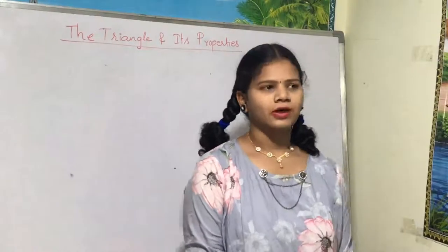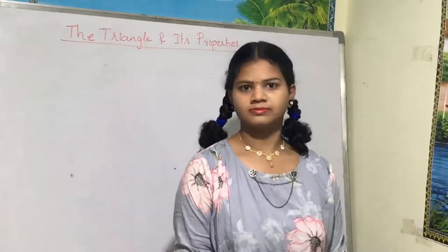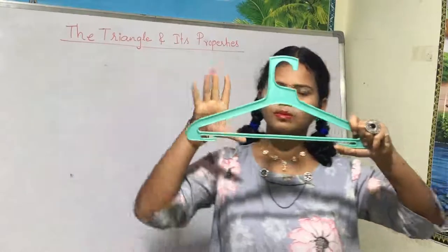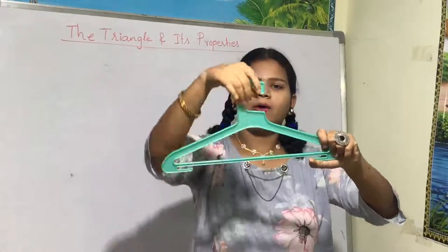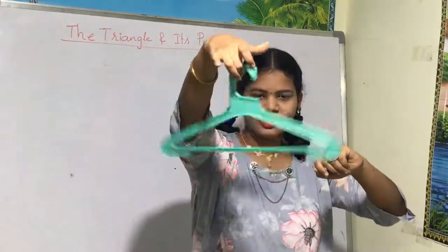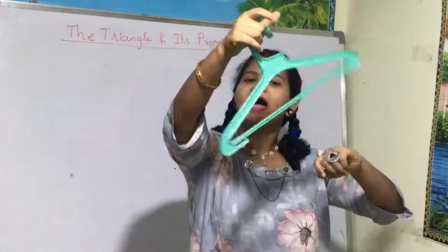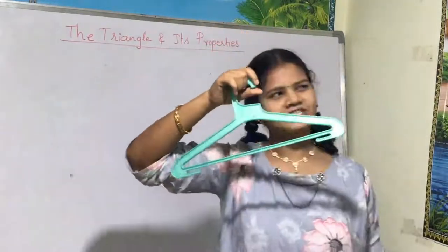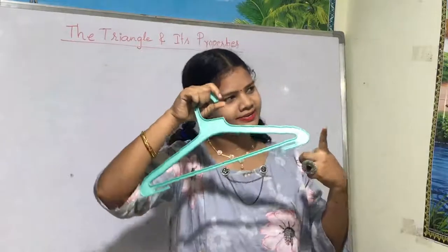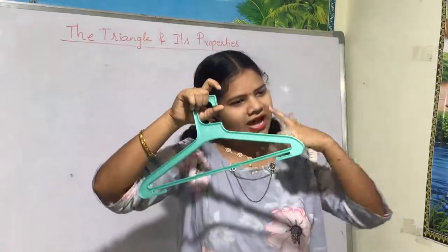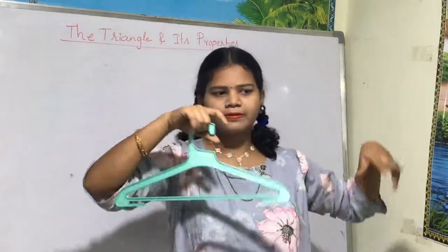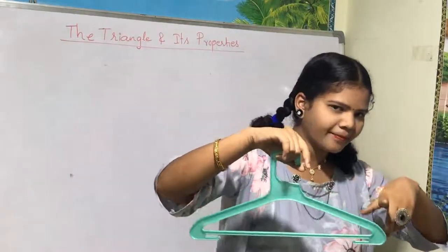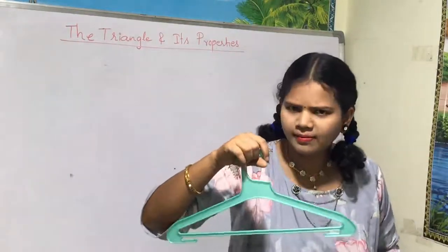I would like to ask you a question, not much difficult. Here you have a dress hanger. This hanger reminds me of a shape. What shape does it resemble? Does this hanger have a square shape? Does it have a rectangle shape? A circle shape? Or a triangle shape?